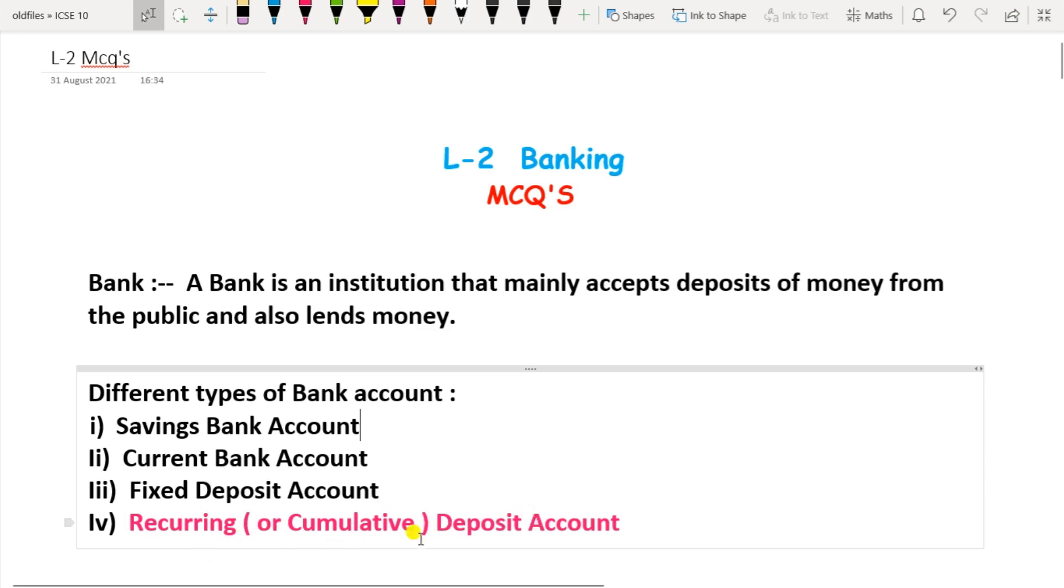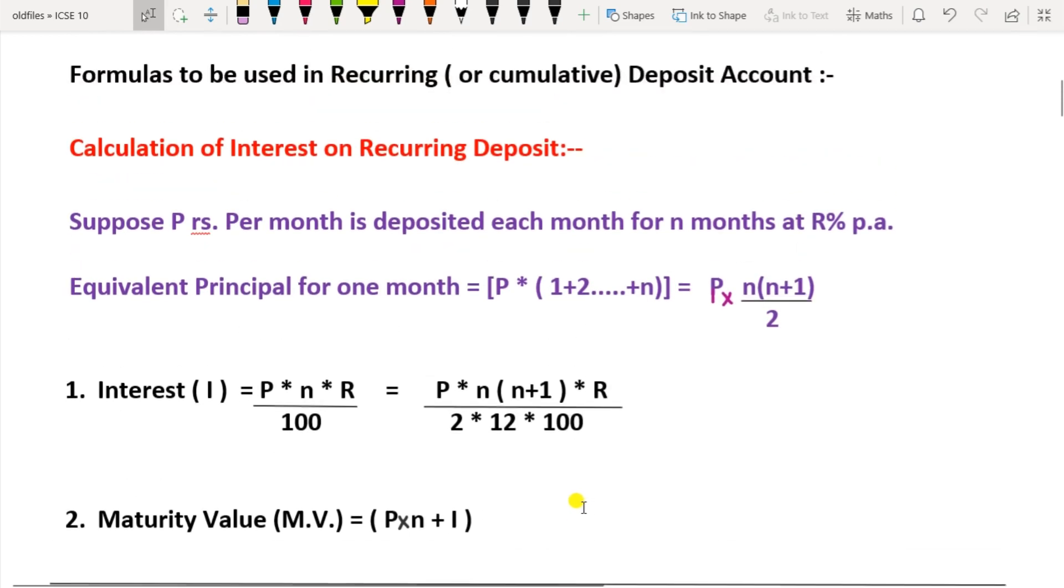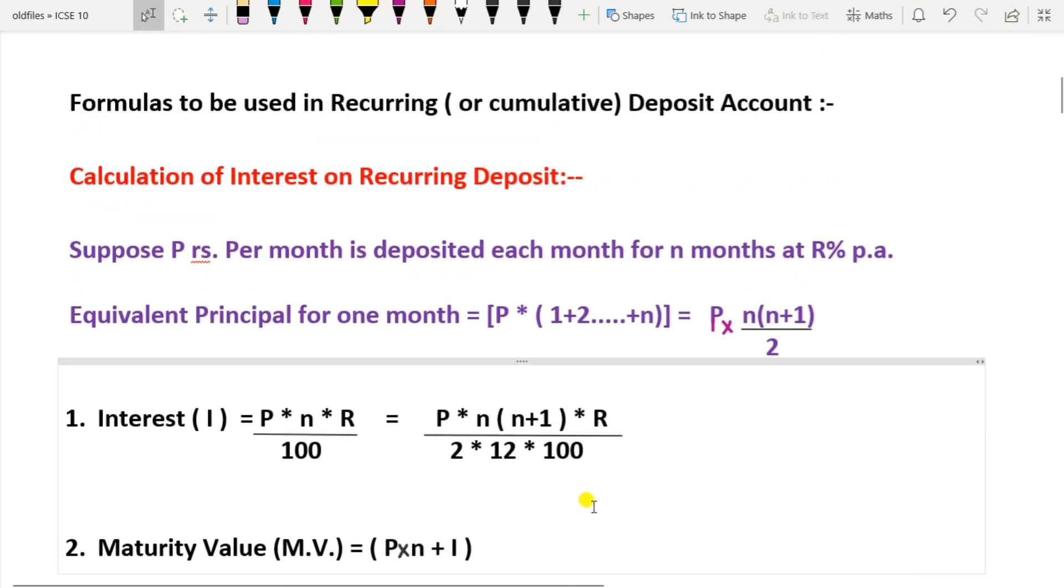Recurring deposit account is also called the cumulative deposit account. It is a time deposit scheme in banks to boost the savings among people of small and medium income groups. Under this system, an investor deposits a certain fixed amount in multiples of five every month for a specified period calculated in months. A fixed rate of interest is provided by the bank on the interest earned. On the maturity of the stipulated time, the investor gets all his deposited money along with a certain amount of interest added to the original money.